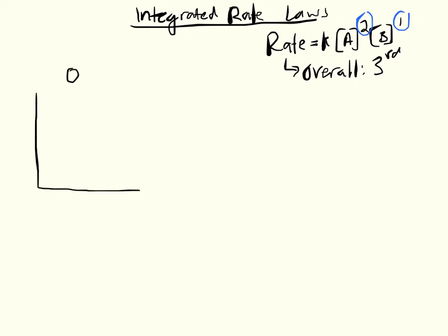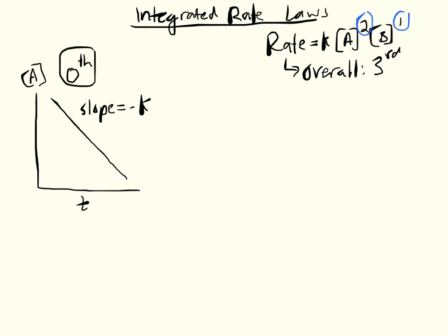If a reaction is zero order and we plot the concentration of the reactant versus time, we see a line with a negative slope, where the slope equals negative K. So if we collect data, plot concentration of A versus time, and get a straight line, that tells us the reaction is zero order with respect to A.